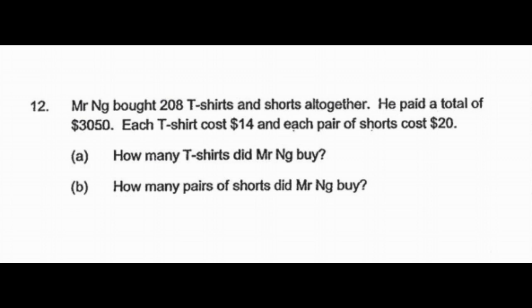Mr. Ng bought 208 t-shirts and shorts altogether. He paid a total of $3,050. Each t-shirt cost $14 and each pair of shorts cost $20. Part A of the question is how many t-shirts did Mr. Ng buy, and Part B is how many pairs of shorts did Mr. Ng buy.